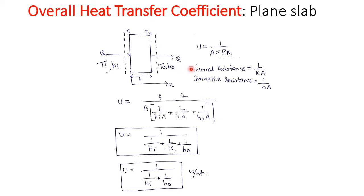Let us recall the thermal resistances. For the plane slab, the thermal conduction resistance is given by L divided by K into A, which was already discussed in module one based on Ohm's law. The convective thermal resistance is given by the formula 1 divided by H into A.